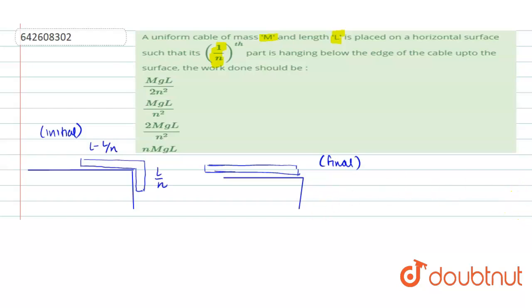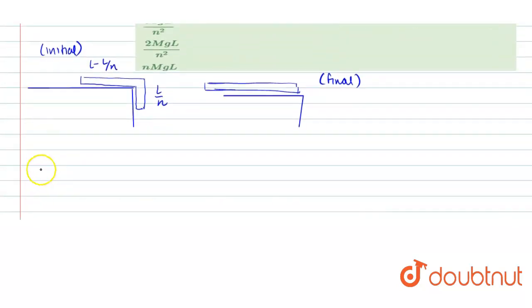Okay, now as we know, work done will be equals to the change in potential energy. Work done by the external agent will be equals to change in potential energy of the chain. So that means U final minus U initial, okay? So we can take this level as the datum point.